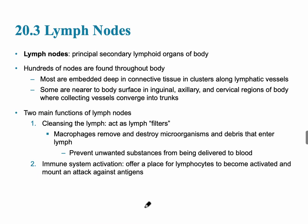The lymph nodes are the principal organs of the lymphatic tissue and the main secondary lymphoid organ of the body. There are hundreds of them embedded in connective tissue in clusters along the lymphatic vessels. They act like washing machines of the body, cleansing the lymph as it travels through — acting as lymph filters. Macrophages remove and destroy microorganisms. If lymph nodes in a particular area are removed, fluid would drain into that specific area.